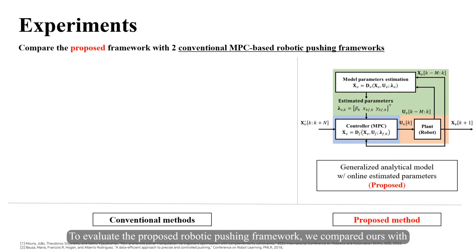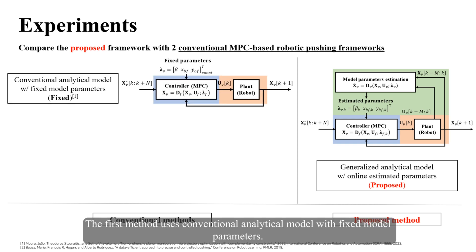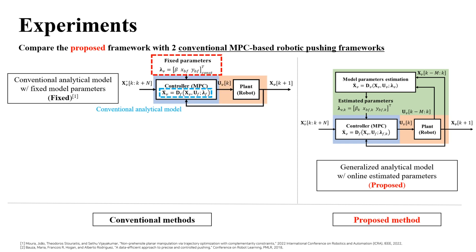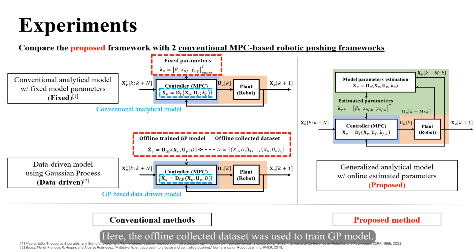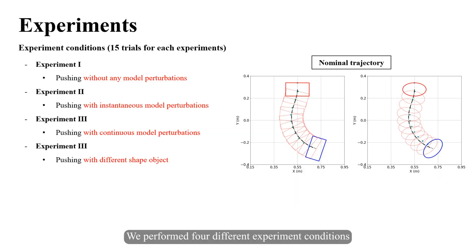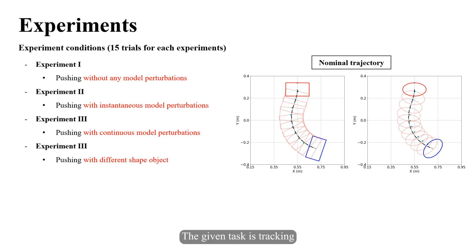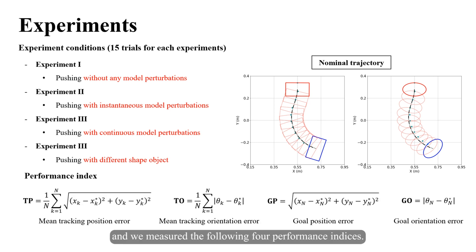To evaluate the proposed robotic pushing framework, we compared ours with two conventional MPC-based robotic pushing frameworks. The first method uses a conventional analytical model with fixed model parameters. The second method uses a Gaussian process-based data-driven model, where an offline collected dataset was used to train the GP model. We performed four different experiment conditions, repeated 15 times each. The given task is tracking a curved-shaped nominal trajectory, and we measured four performance indices.